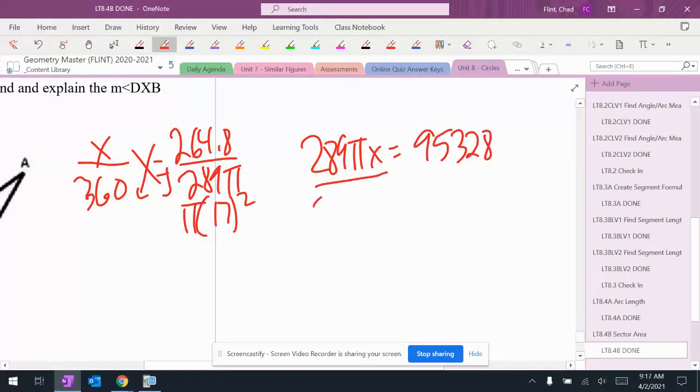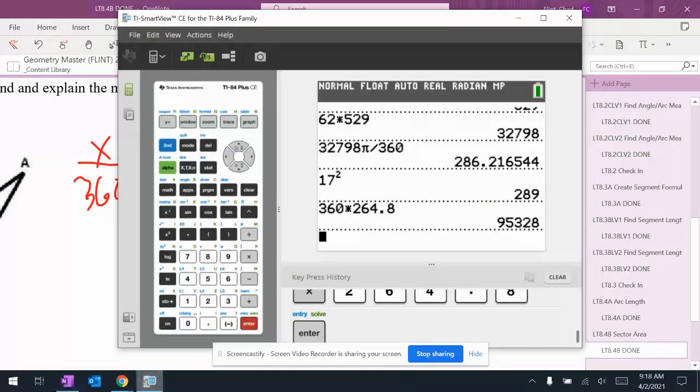95,328, and I divide by 289 pi. Same thing I talked about in number seven - since I'm dividing by two things in the denominator, I have to make sure that I put it into a fraction.